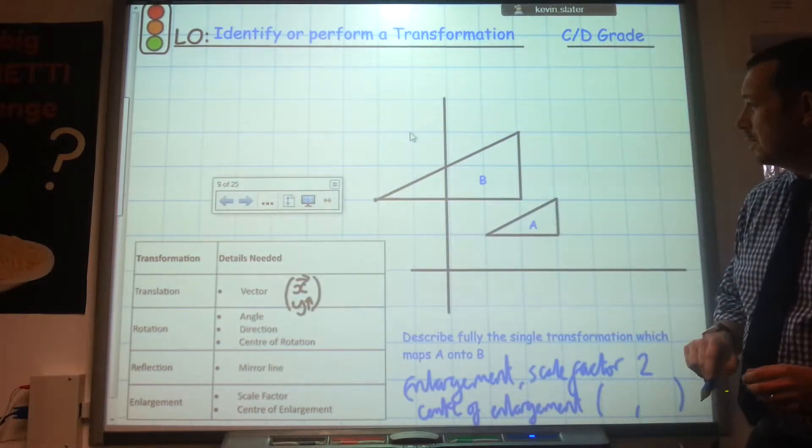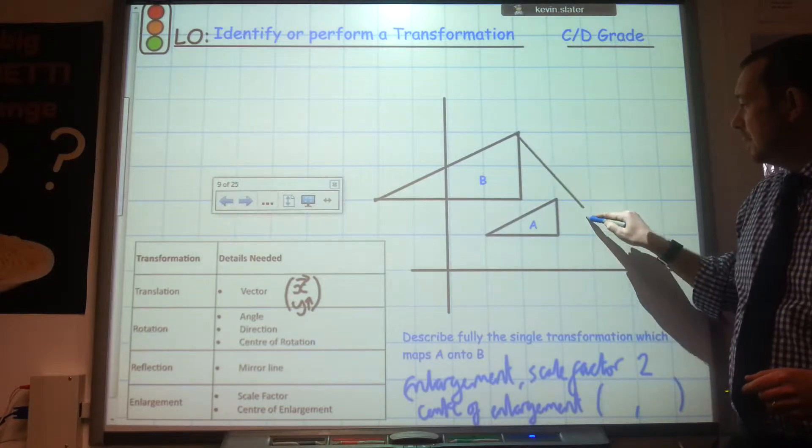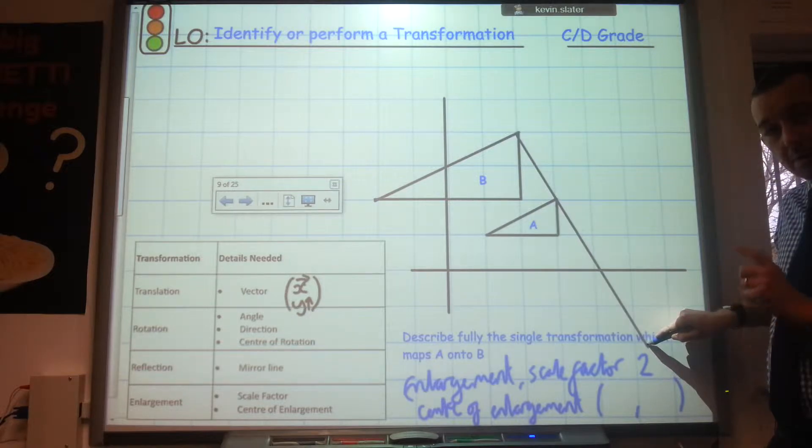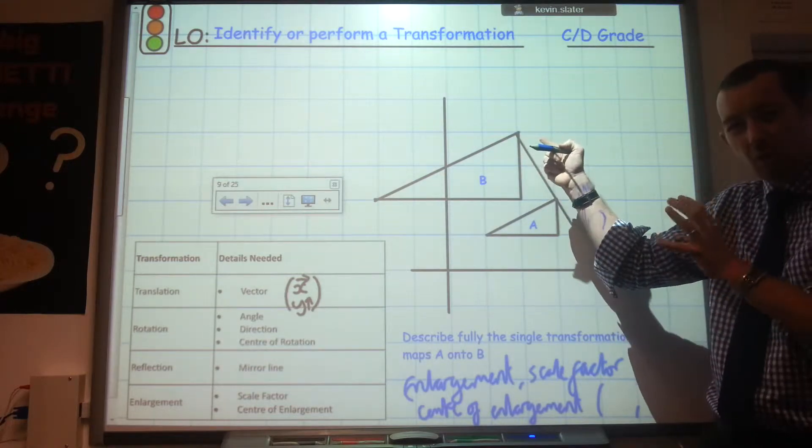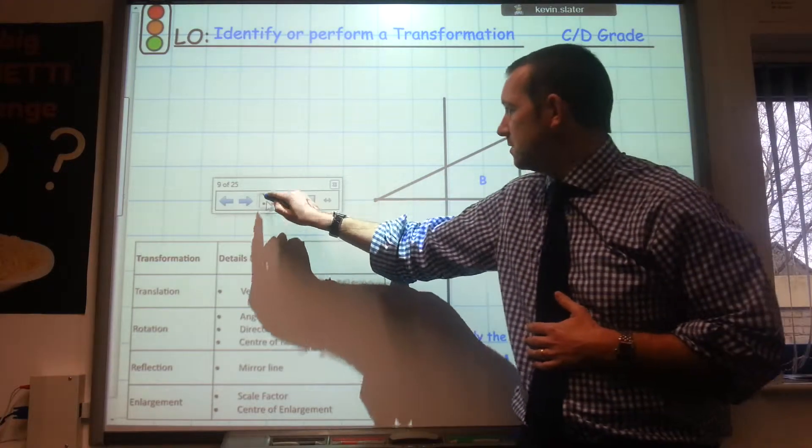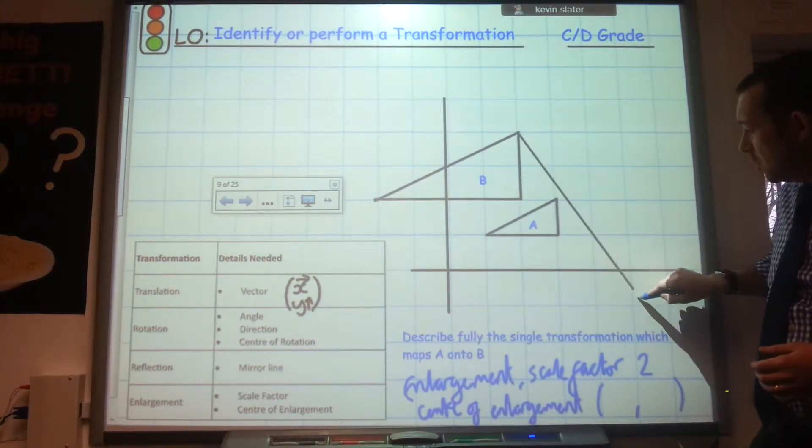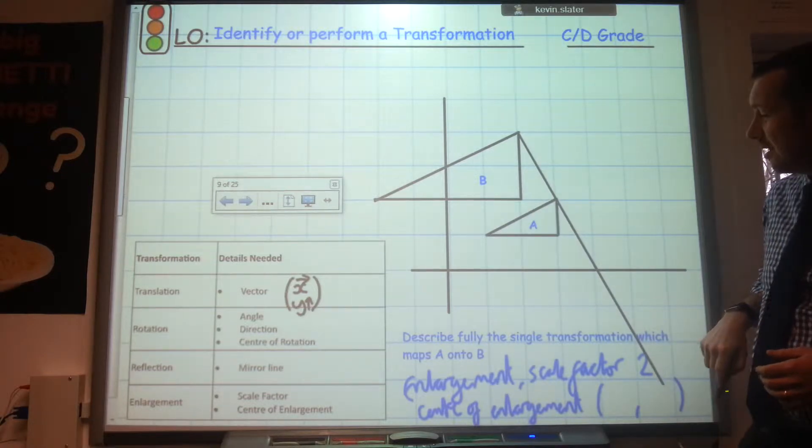So using my ruler on my page, I take a corner on the new shape and I join it up to the same corner on the old shape. But I carry the line going on like that. And actually what I've done here is I haven't quite met the corner there probably. So I'm actually going to do that again. So I'm going right from the corner here to the same corner on the original shape and carry the line going.